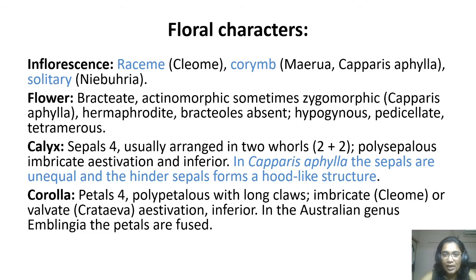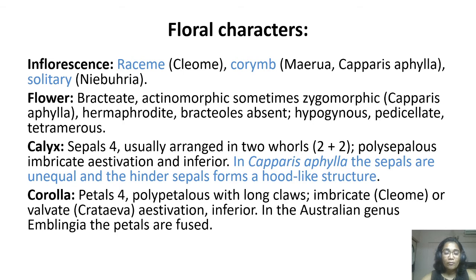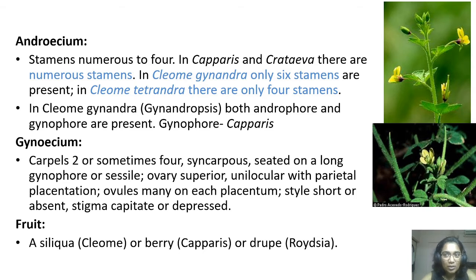Flower bractiate — bracts are present — actinomorphic, sometimes zygomorphic. In the case of Capparis aphylla it is zygomorphic. Hermaphrodite, bracteoles absent, hypogynous, pedicellate, and trimerous. Calyx of four sepals, usually arranged in two whorls of two plus two, polycephalous imbricate aestivation and inferior. In Capparis aphylla, the sepals are unequal and the inner sepals form a hood-like structure. Corolla: petals are four, polypetalous with long claws, imbricate in case of Cleome or valvate in case of Cratevia. Aestivation inferior.